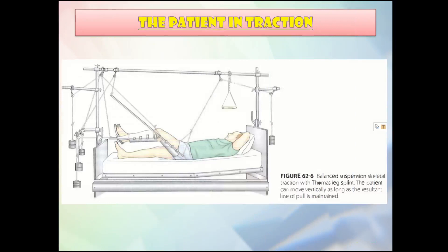Often, skeletal traction is balanced traction, where the extremity is off the bed, allowing some patient movement. The Thomas splint with Pearson knee attachment is frequently used with skeletal traction for fractures of the femur. An overbed frame is used because upward traction is required. The patient can move vertically as the resultant line of pull is maintained, and a trapeze bar aids patient movement.